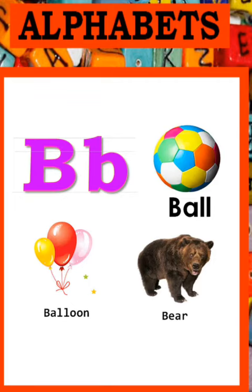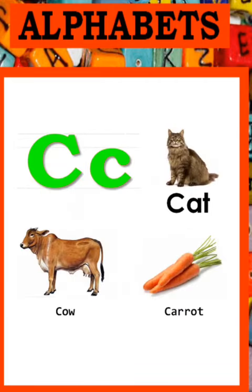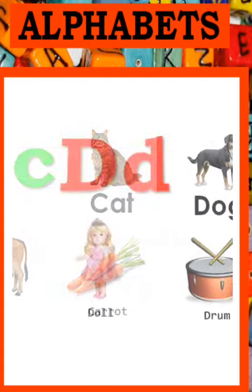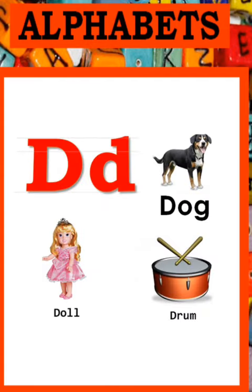Bear. C - C - Cat, Cow and Carrot. D - D - Dog, Doll and Drum.